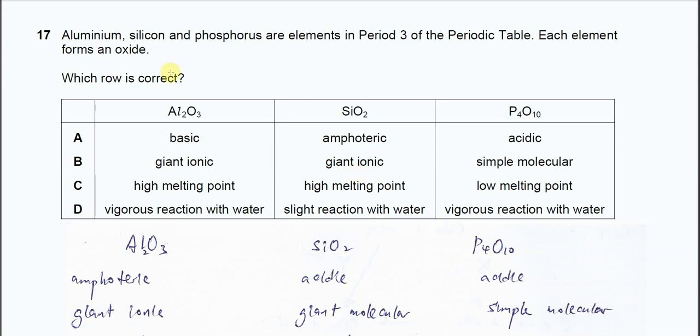Question 17. Aluminium, silicon and phosphorus are elements in Period 3. Each element can form an oxide. So which row is correct?